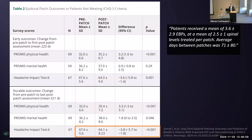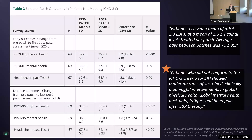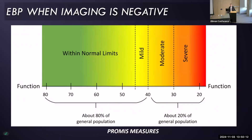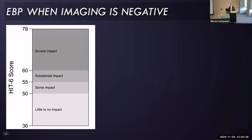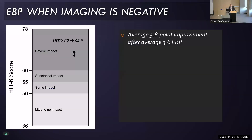The HIT improved from 67 to 64. Their conclusion was that there were moderate rates of sustained clinically meaningful improvement. The PROMIS measures are based on T-scores using statistical distributions, showing small but significant changes in physical health after blood patches. Unfortunately, on average these patients were still in the most severe headache category after an average of 3.6 epidural blood patches.